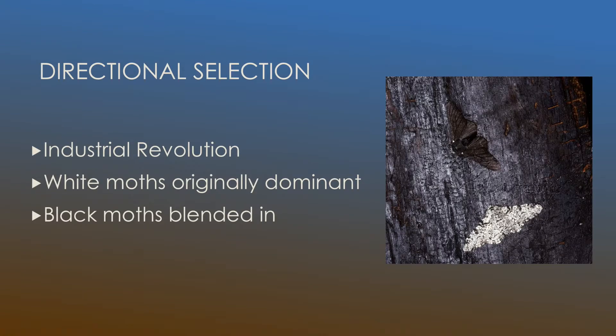And this diagram depicts what occurred during the industrial revolution in England where trees began to be covered in black soot. And what this meant is that the black peppered moths were better able to blend in with the environment and the white peppered moths weren't. They were more likely to stand out and this greatly decreased their chances of survival.